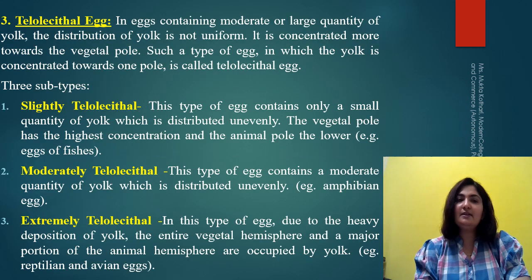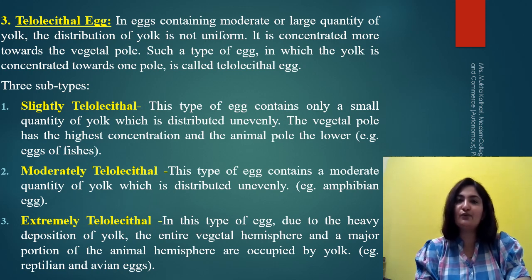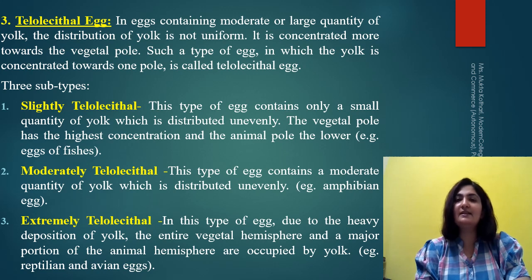The third type according to the distribution of yolk is the telolecithal egg. 'Telo' means at one end, so in this type of egg the yolk is present at one end of the egg cell. The end where the yolk is present is the vegetal pole, and the opposite end is considered the animal pole.